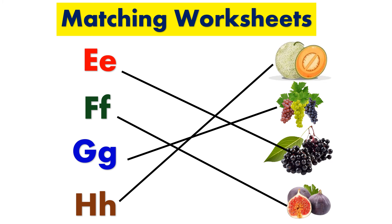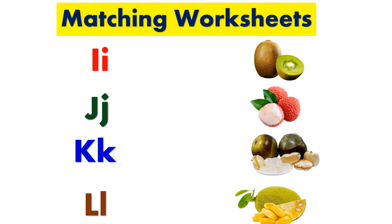G for grapes, H for honeydew melon, I for ice apple.